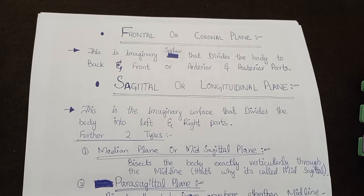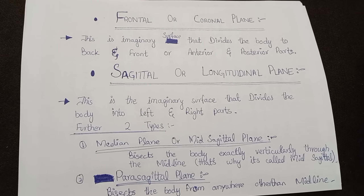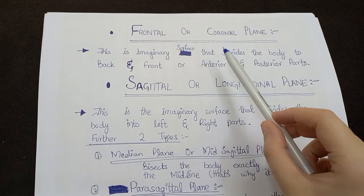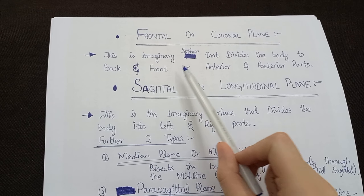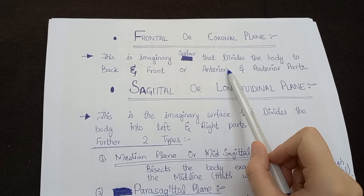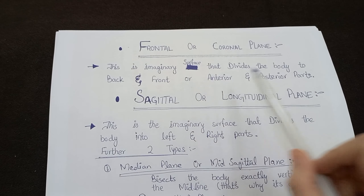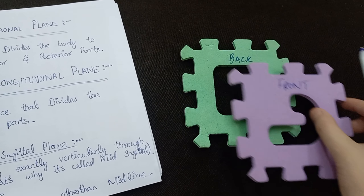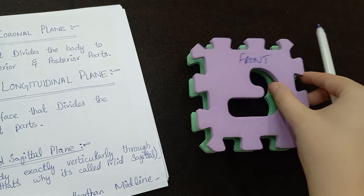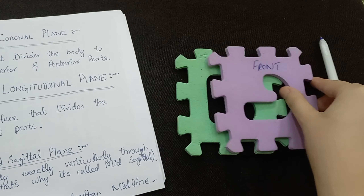Talking about the frontal plane, that is also known as the coronal plane — this is an imaginary surface that divides the body into front and back, or anterior and posterior parts.